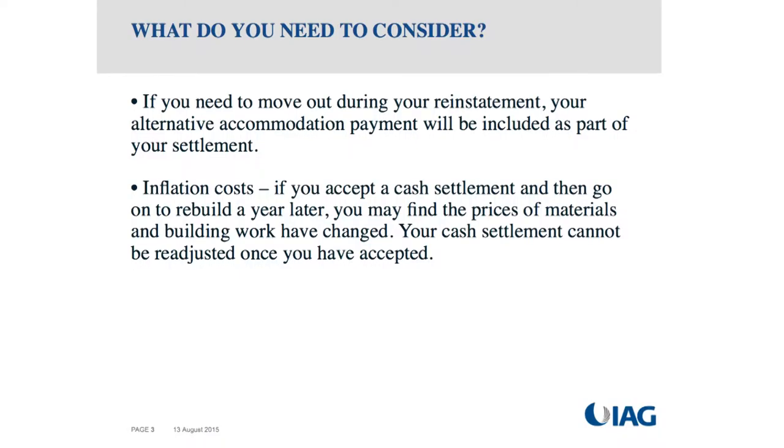If you need to move out during your reinstatement, most policies include an alternative accommodation payment. If you haven't already used it, it will be included as part of your settlement. For an under-cap repair or rebuild, your insurer will ask for a letter about your scope of works from Fletchers, then estimate how long you'll be out and pay accordingly. For a rebuild, the maximum alternative accommodation payment is usually included. For most IAG policies it's $20,000; for some other policies it's a percentage of contents cover.